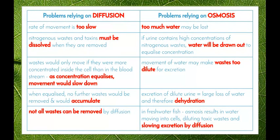Some problems with relying on diffusion: the rate of movement of substances is too slow. Nitrogenous wastes and toxins must be dissolved when they are removed. Wastes would only move if they were more concentrated inside the cell than in the bloodstream; as concentration equalises, movement would slow down. Once equalised, no further wastes would be removed and they would start to accumulate. Also, not all wastes are able to be removed by the process of diffusion.